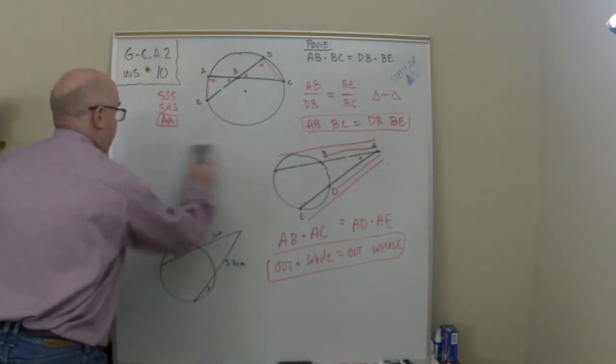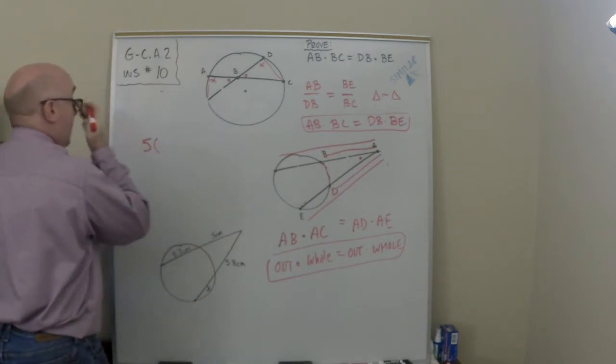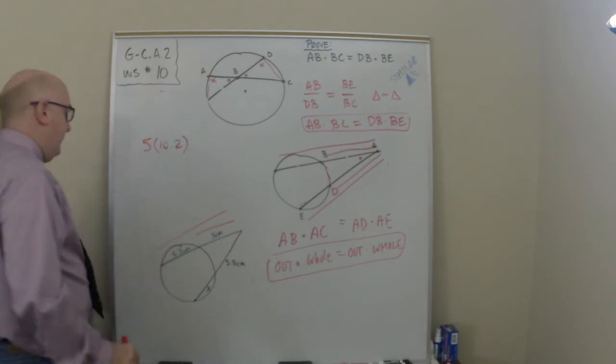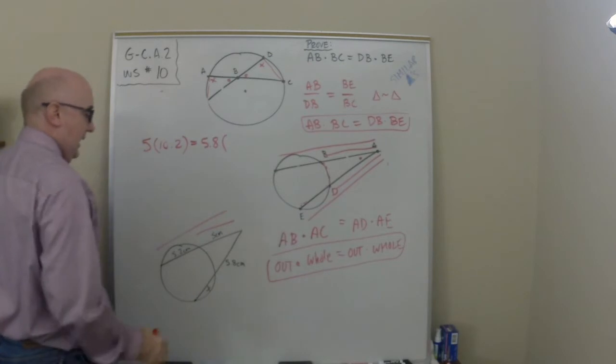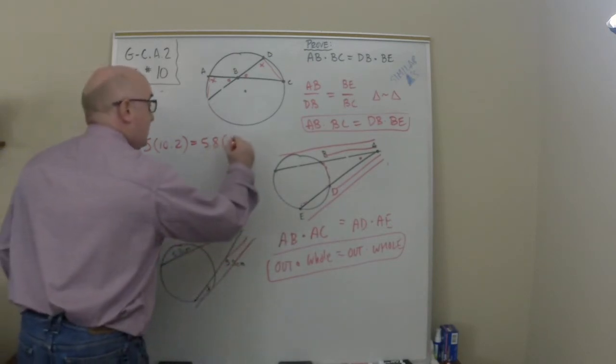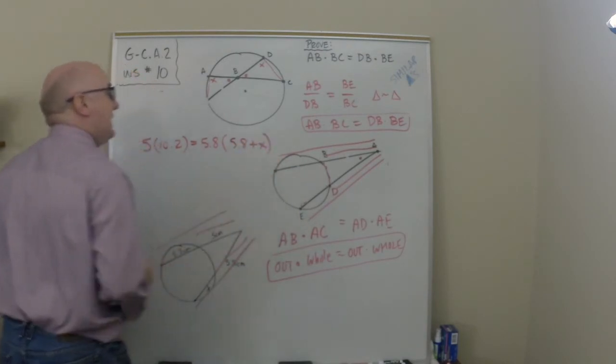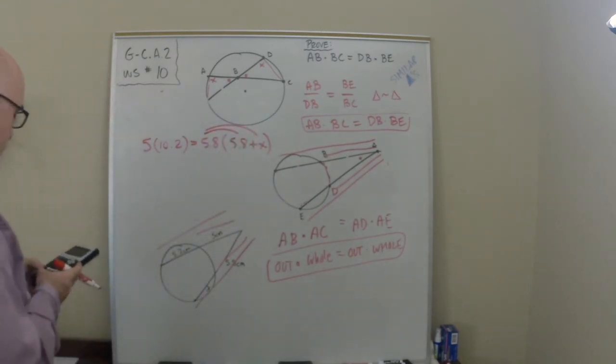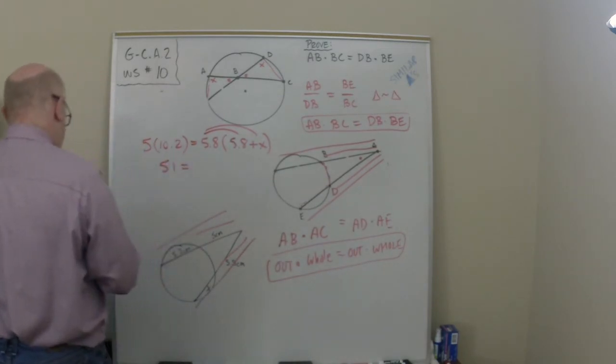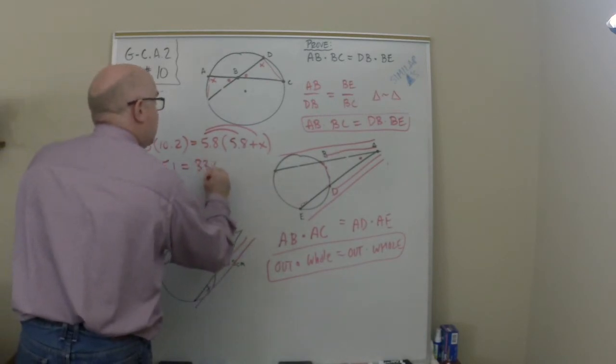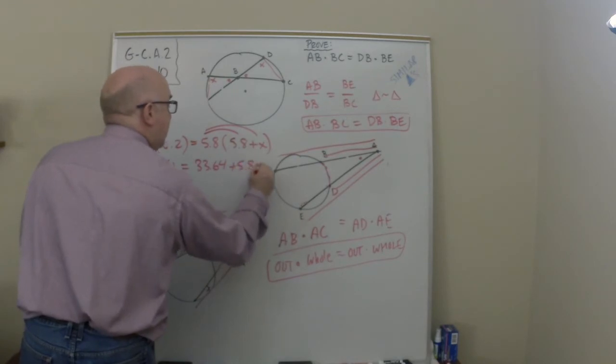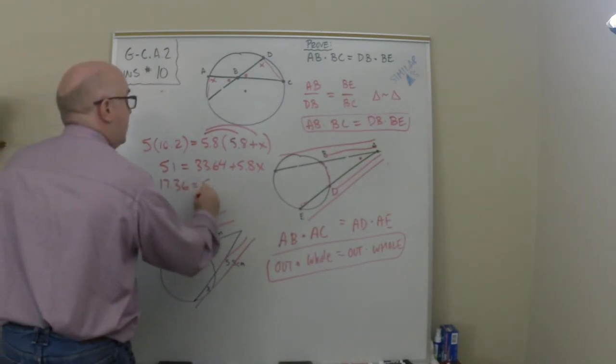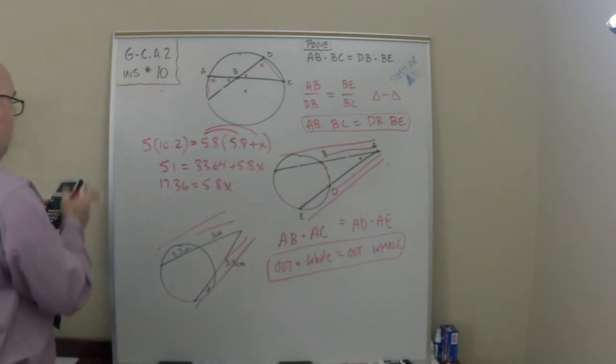So this would go like this: five is the outside, five is the outside and the whole is 10.2. Equals the outside 5.8, the outside times the whole piece which would be 5.8 plus x. Now you're going to multiply that. Five times 10.2, I know what that is, that's 51. 5.8 times 5.8 is 33.64 and then I get plus 5.8x. Bring that over: 51 minus 33.64 is 17.36.